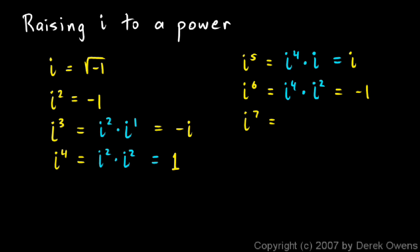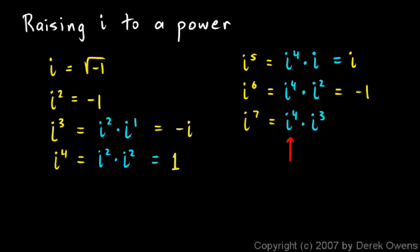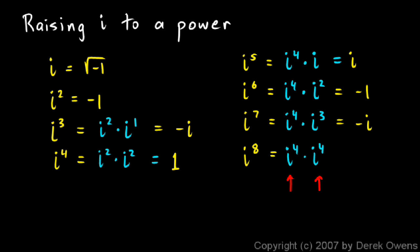i to the seventh — you can think of that as i to the fourth times i cubed. Earlier we saw i cubed is equal to negative i. So i to the seventh is i to the fourth times negative i. And i to the fourth is 1, so this is 1 times negative i, or just negative i. i to the seventh is the same thing as negative i. And i to the eighth is i to the fourth times i to the fourth. i to the fourth is just 1, so this is 1 times 1 — that's just 1. So i to the eighth is 1.